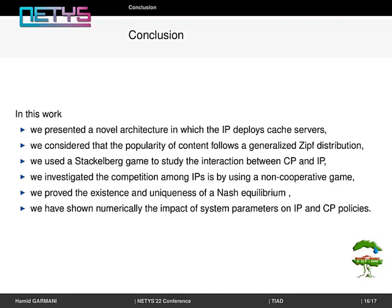Conclusion. In this work, we present a novel architecture in which the infrastructure provider deploys cache servers. We consider that the popularity of content follows a generalized Zipf distribution. We used a Stackelberg game to study the interaction between infrastructure provider and content provider. We investigate the competition between infrastructure providers by using a non-cooperative game. We prove the uniqueness of Nash equilibrium.